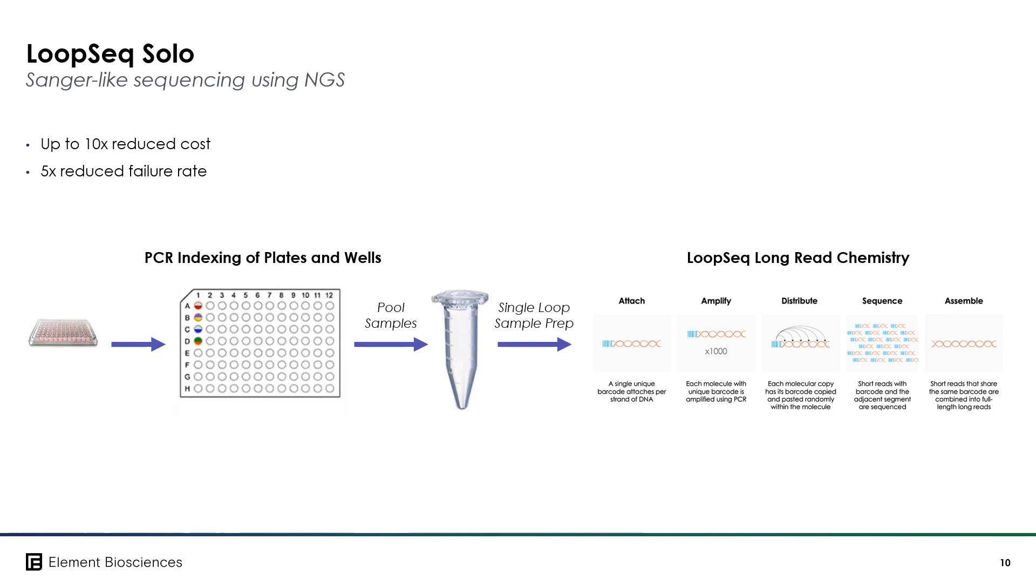For example, if you have 3,000 clones, you can pool tagged samples into a single tube for LoopSeq processing and obtain 3,000 high-quality long read consensus sequences. This reduces the time and cost for clonal sequencing information by at least an order of magnitude depending on how many samples are pooled into that single tube.